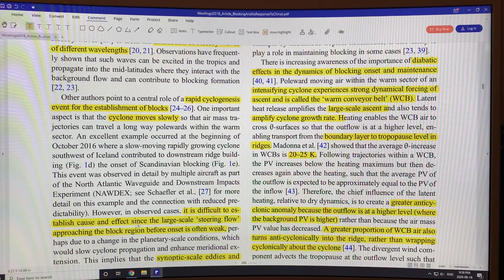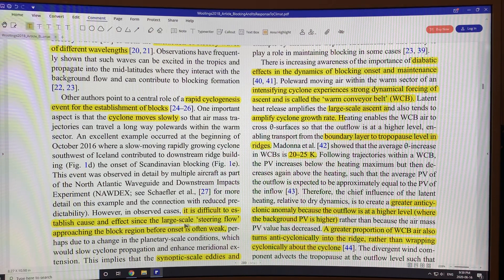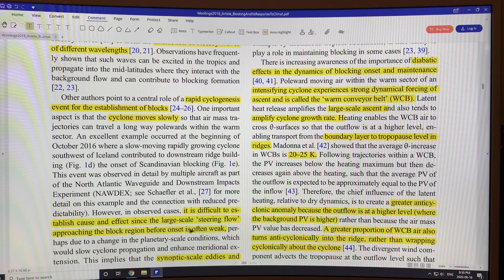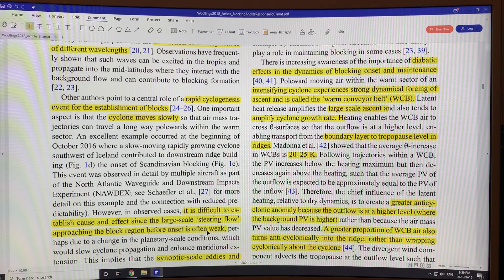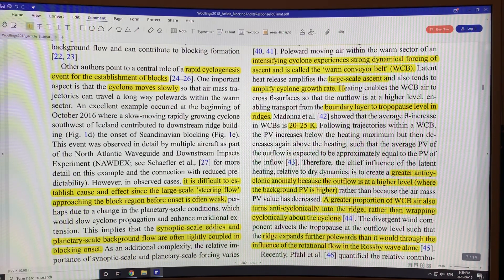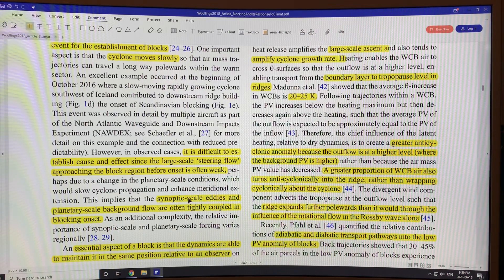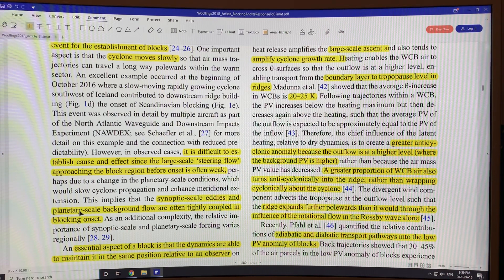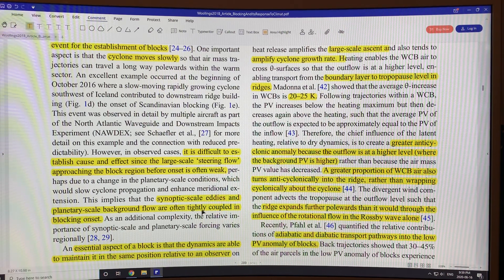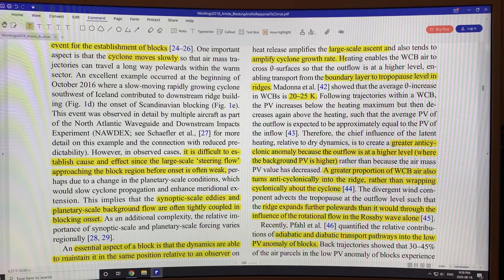But it's difficult to establish cause and effect since the large-scale steering flow of winds approaching the block region before the onset of the block is often weak and then it can increase. You can have these synoptic or weather map scale eddies and the planetary scale background flow. They're tightly coupled at the onset of the blocking.